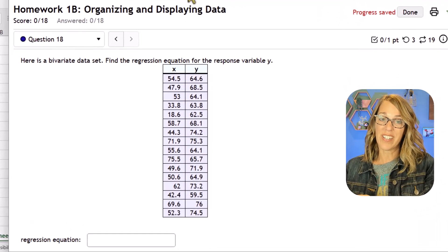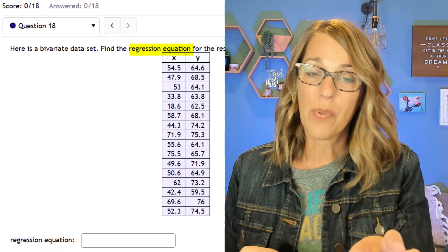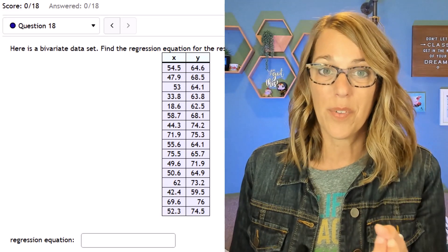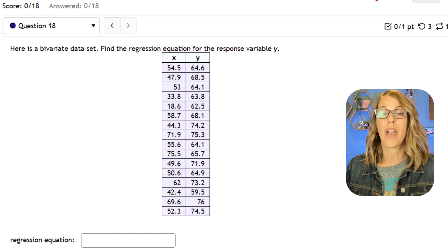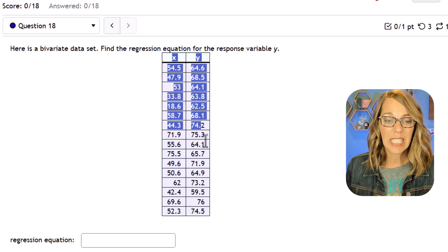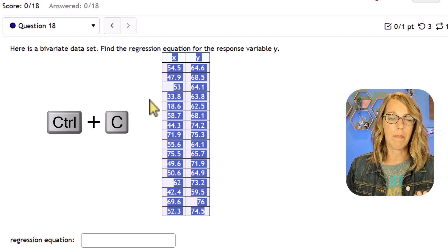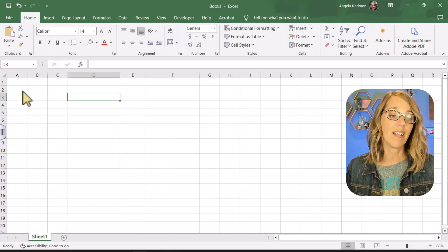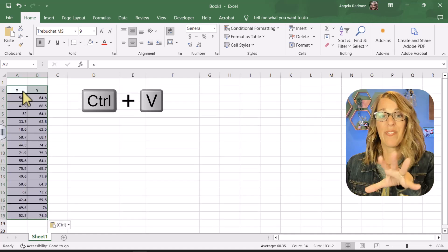This is a homework question that I give my students. It's asking for the equation of the regression line. A lot of these questions also ask for the correlation coefficient, that R value. We're going to do both and we're going to start with the easy way. I'm just going to copy this data and dump it right into Excel. So clicking, holding and dragging through the data. I'm going to do a control C to copy. On a Mac I would do a command C and then over into an empty cell in Excel I'm going to do a control V or command V if you're on a Mac.